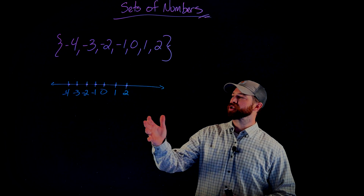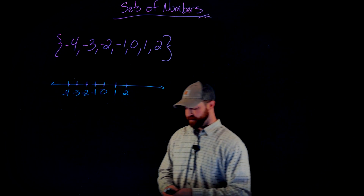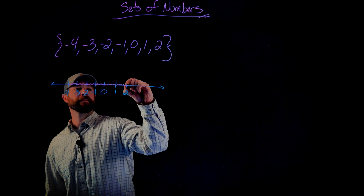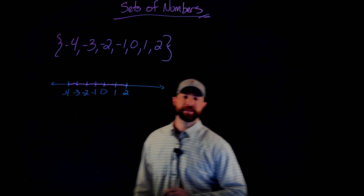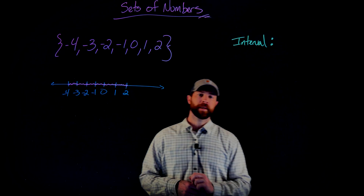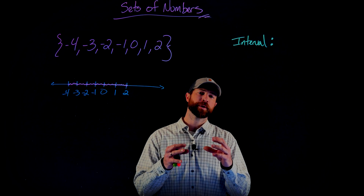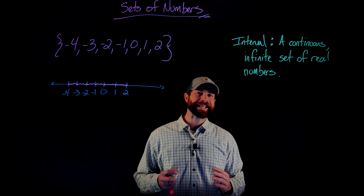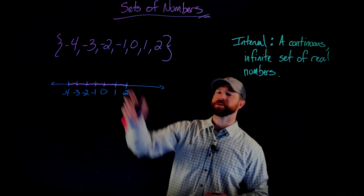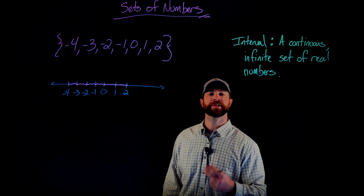Specifically, what if I want to describe all of the possible real numbers between negative 4 and 2? Visually it would look like this — I want all of these numbers between negative 4 and 2. We call these intervals. An interval in mathematics is a continuous set of real numbers. An interval is an infinite set, so it would be ridiculous to think we could list all the possible values this way. We need different notations to describe them.